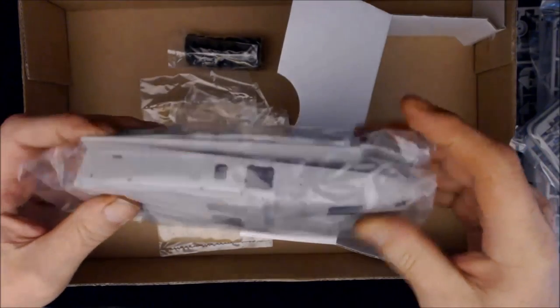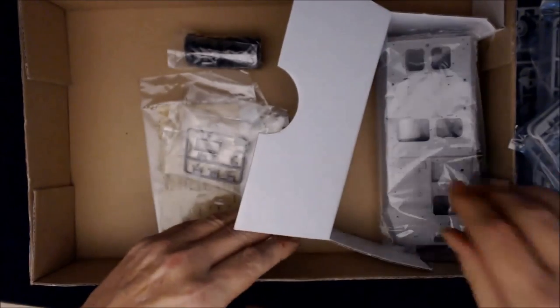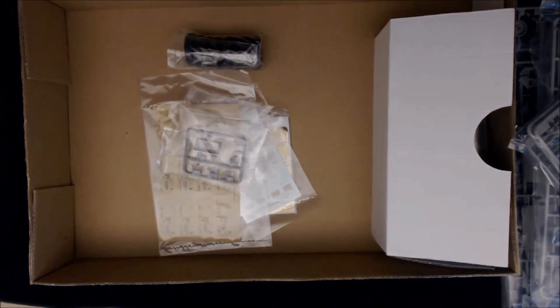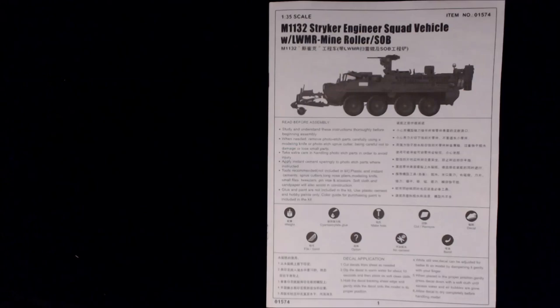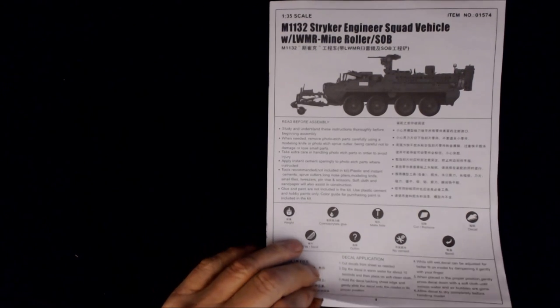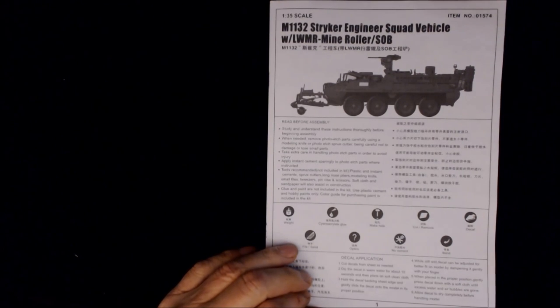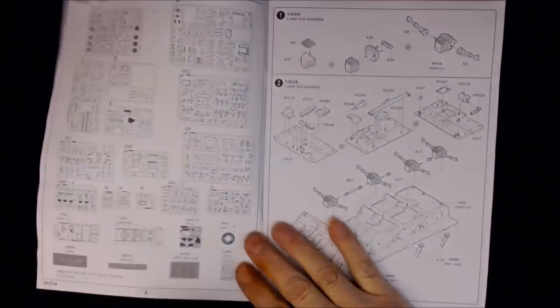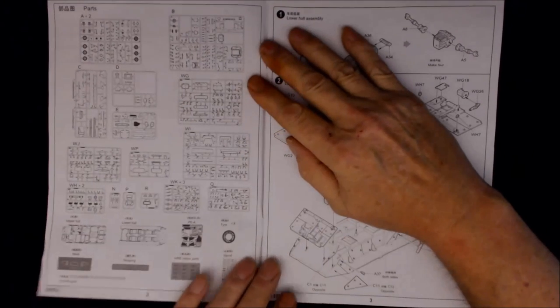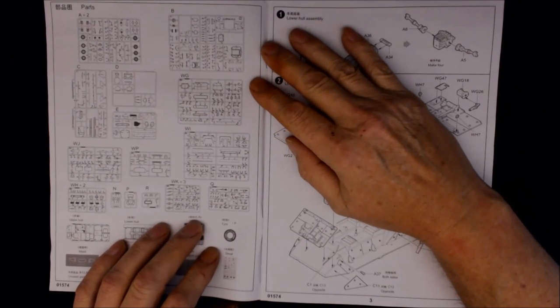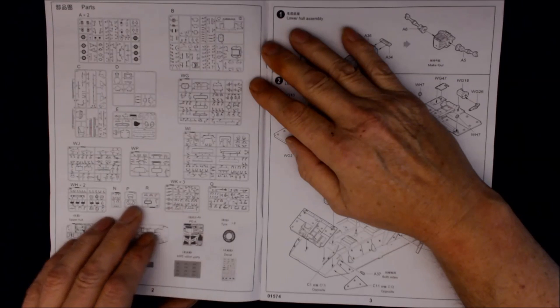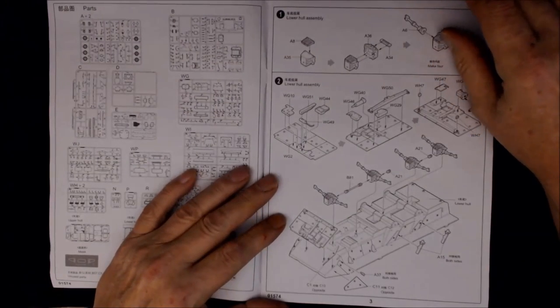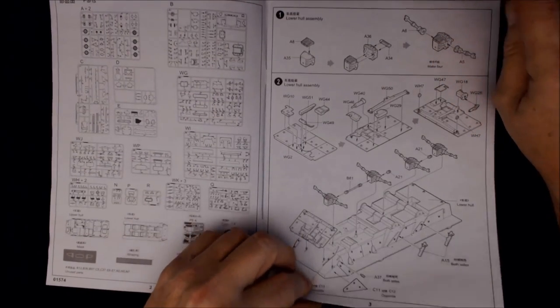Right, what I'll do now is I'll sort this lot out, put you on pause, and we'll have a look at the instructions and then have a closer look at the parts. Right, the instructions. What can you say about instructions? Picture of the Stryker into the third page. Or the sprues. Mind you, I think you're going to need a magnifying glass to see the numbers but they are there.